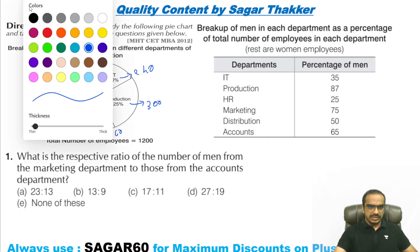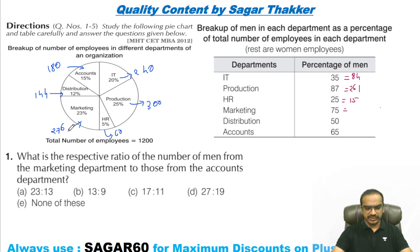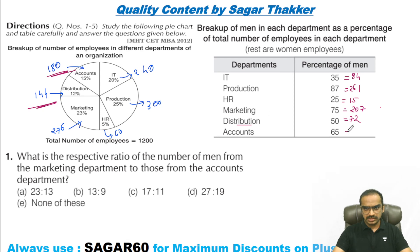This is how it will be — if you want to find the percentage of men. Number of men will be: 84, 87 — that is 261. 25% is one-fourth, that is 15. Marketing is 75% of 276 — 75% is 207. And 144, 50% is 72. And 180, 65% is 117.